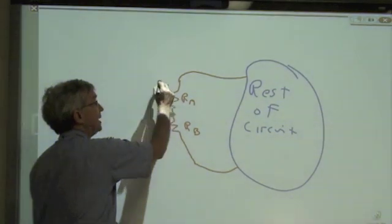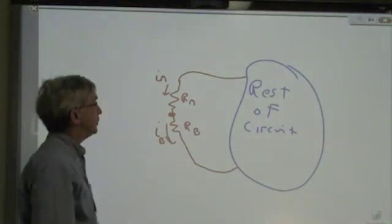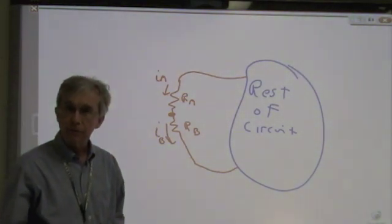So if this is resistor RA and this is resistor RB, I have a current IA and a current IB.